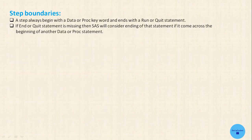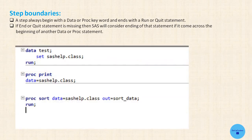Next is step boundaries. A step always begins with a data or proc keyword and ends with a run or quit statement. If there is no run or quit statement, then the step will end when it comes across the beginning of another data or proc statement. Here, the first step starts with the keyword 'data' and ends when it comes across a run statement. The second step starts with 'proc' but has no run or quit statement, so it ends when it comes across the beginning of another proc statement. The third proc step starts with 'proc' and ends with the run statement.